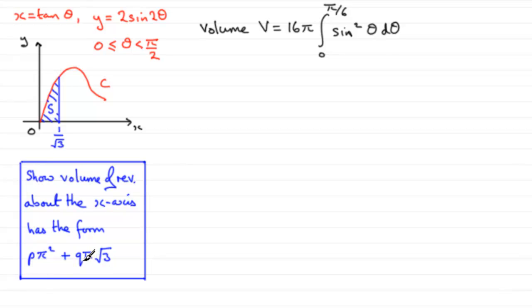So how do we do this? Well, we found out in the previous part that the volume V was given by this result here. It was 16 pi times the integral from 0 to pi upon 6 of sine squared theta d theta. And we've already worked out in part A of the question what the integral of sine squared theta is with respect to theta.